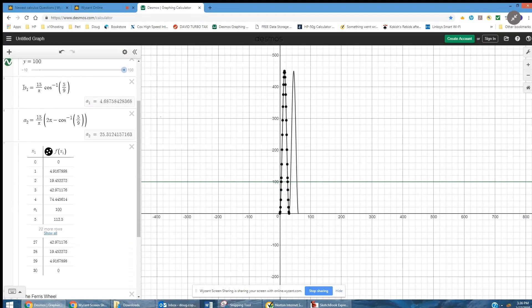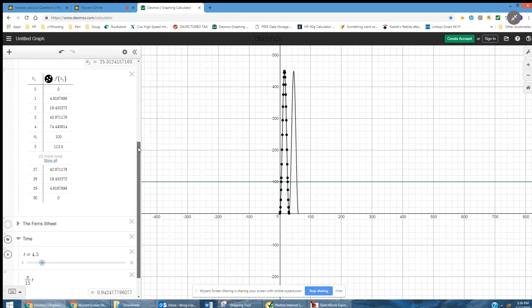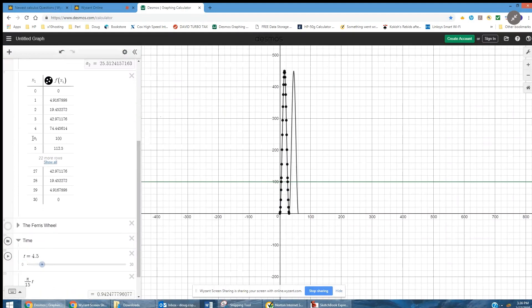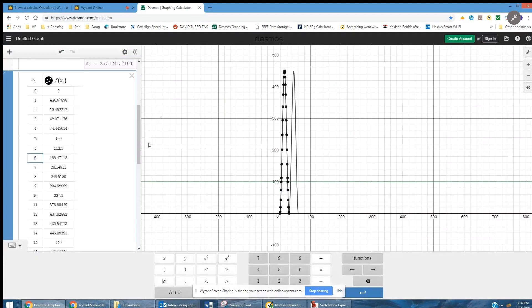And that's what I got here. a₁ is 15/π times the inverse cosine of 5/9. I'll let you work that out, but here's a₁ in the table. When time is equal to a₁, the height is 100.